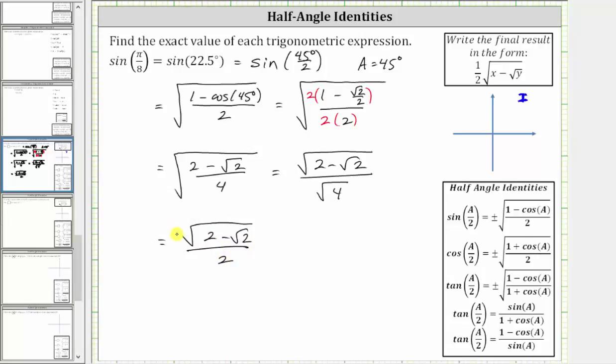Or if we wanted to, we can think of having a one here and write this as one half times the square root of two minus square root two, which in our homework is the form that is requested.